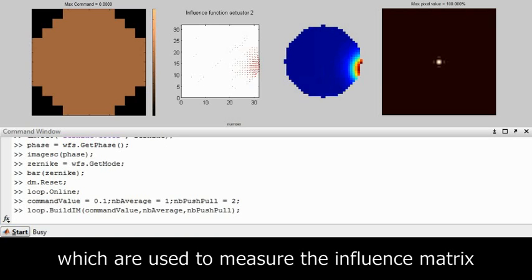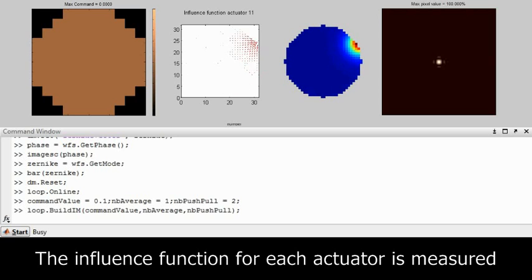The influence functions of the deformable mirror are measured by pushing and pulling each actuator in turn and measuring their influence on the wavefront sensor.